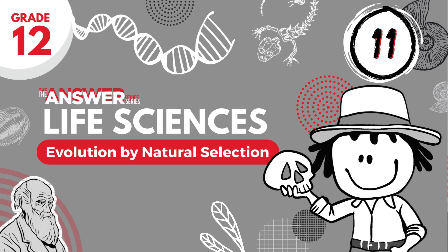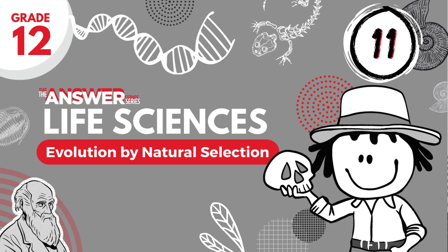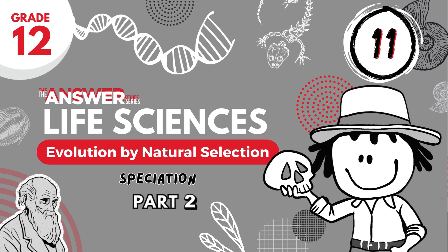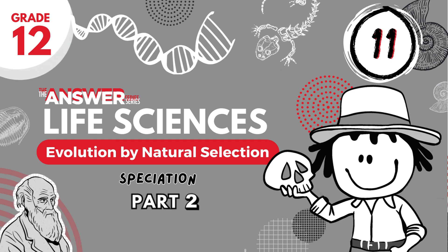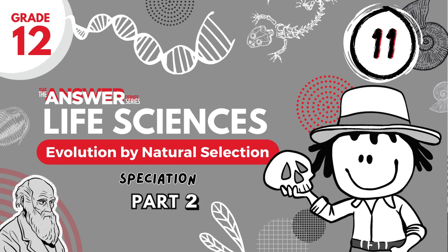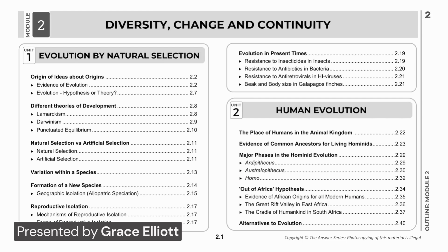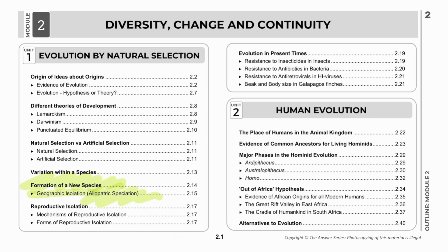Hello grade 12s and welcome to the Answer Series life sciences videos based on our study guides. In this video we look at part 2 of speciation, the formation of a new species. In this second video discussing the formation of new species, we focus on examples of allopatric speciation due to geographic isolation, as well as a brief explanation of sympatric speciation.